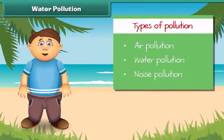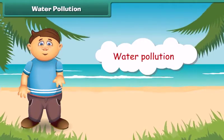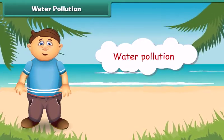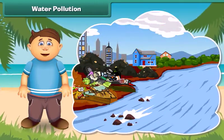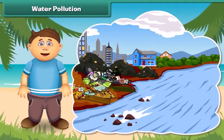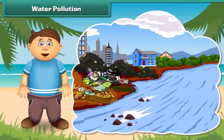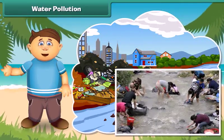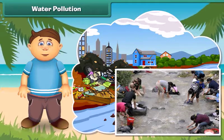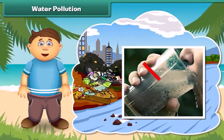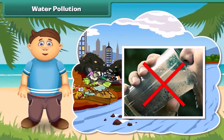Now let's know about water pollution. Like air, water also gets polluted. Look at this river — it is very dirty. It receives sewage from homes and wastes from factories. Some people also wash their clothes and throw waste into it. We should not drink this water as it contains germs and may result in diseases.